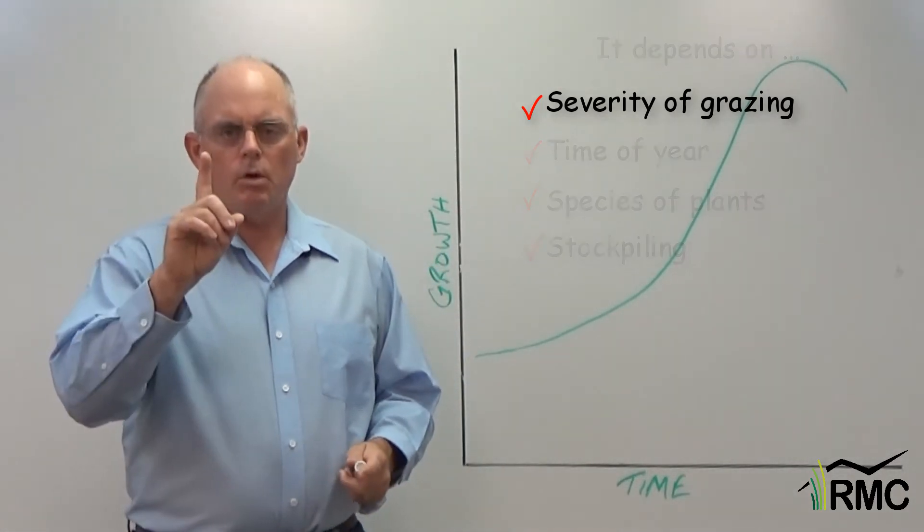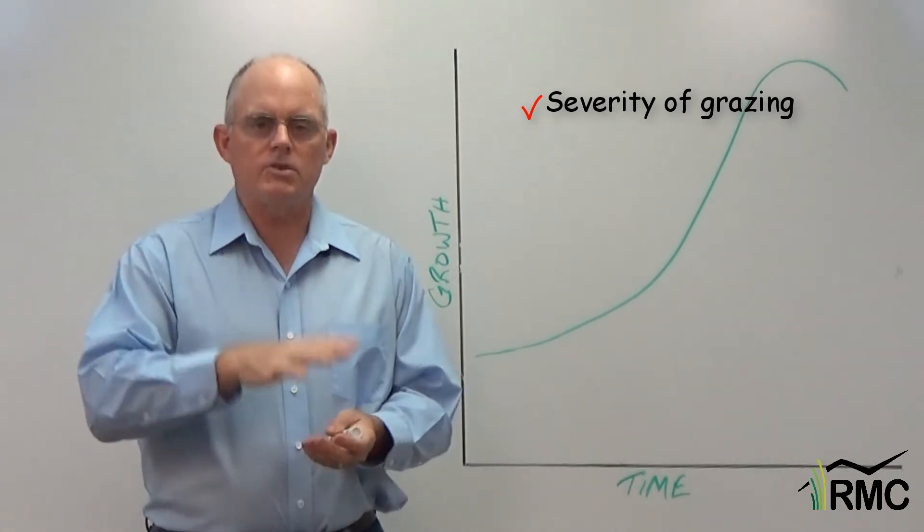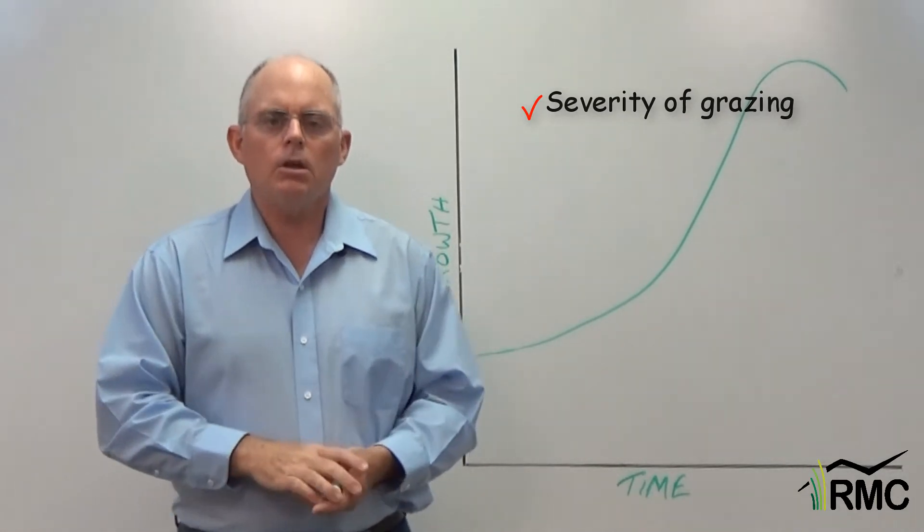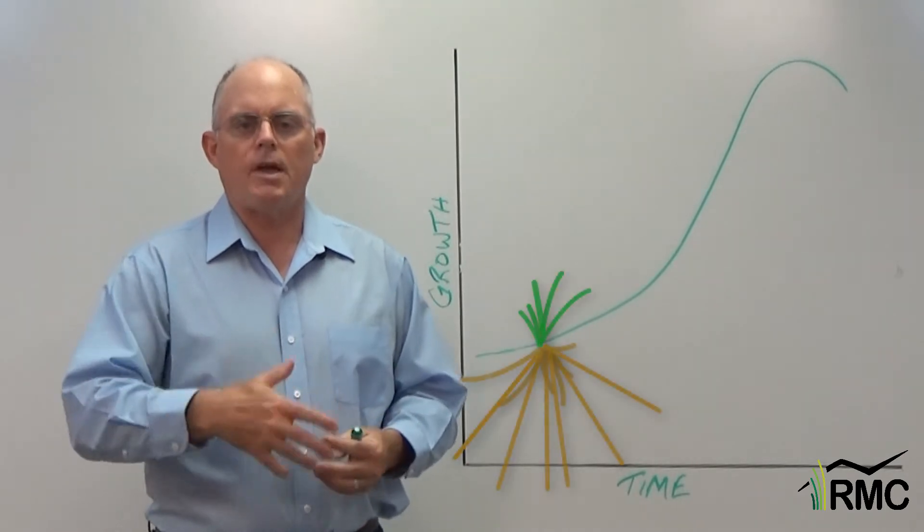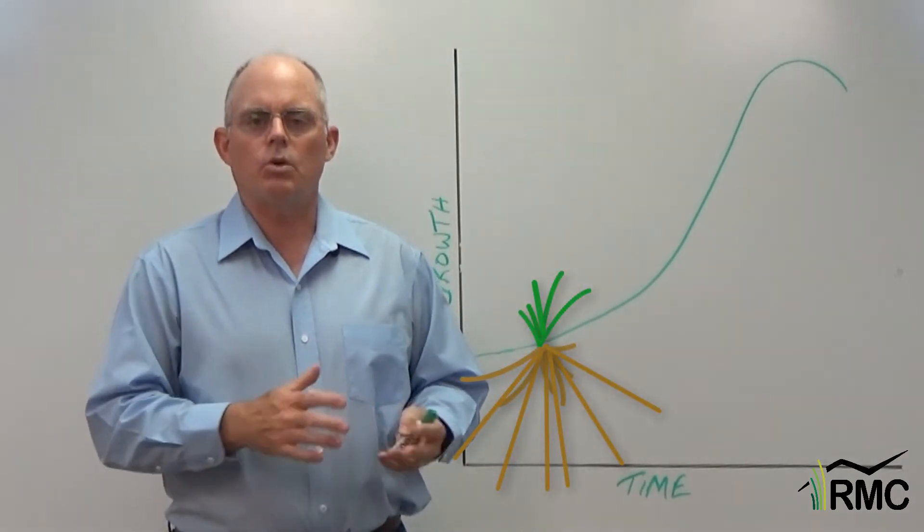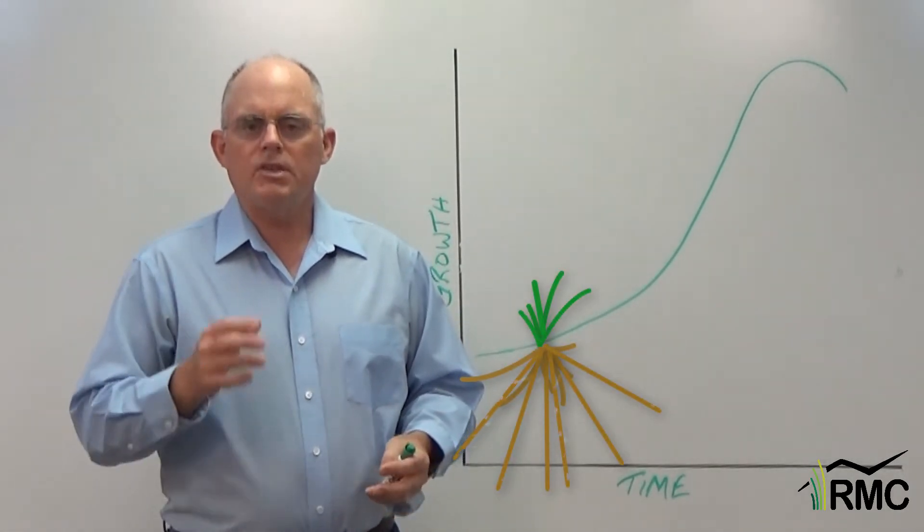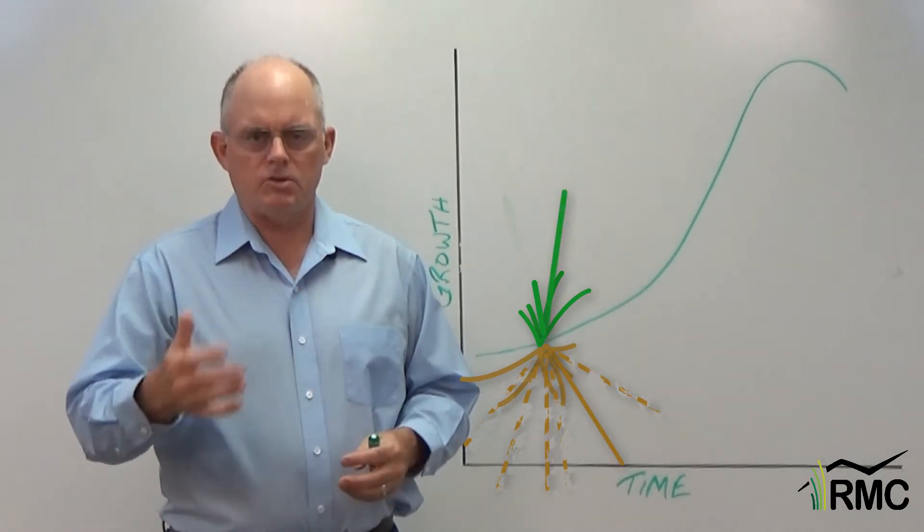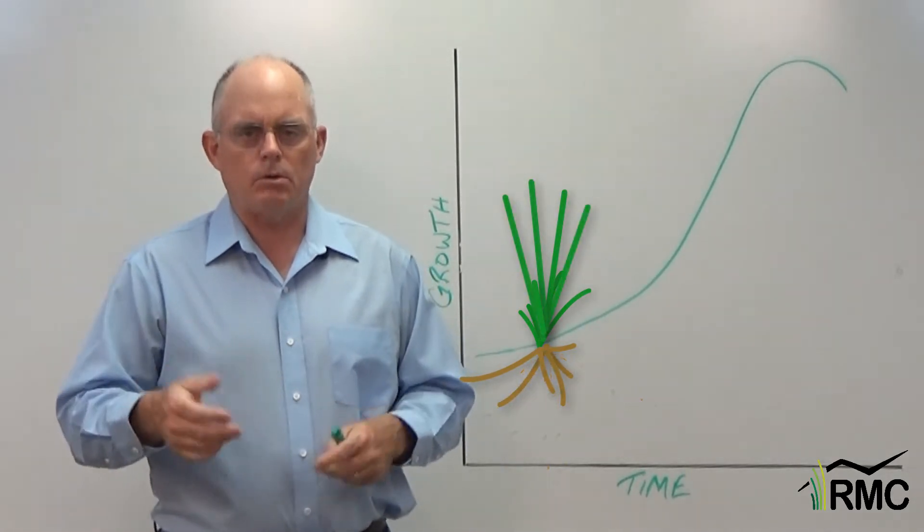Well right now let's just look at one thing. How severely we graze our pastures. A lot of ranchers seem to think that the energy for a grass plant's regrowth after grazing comes from energy stored in the roots and crowns. But that's pretty much just when a plant breaks dormancy. At the very beginning of the growing season.